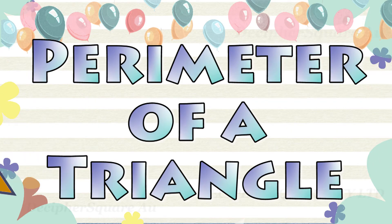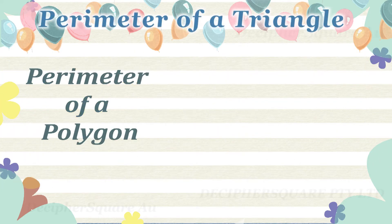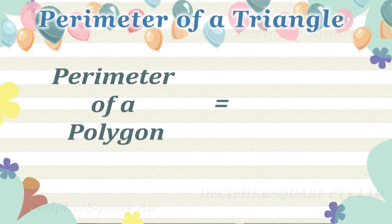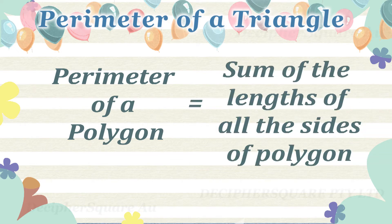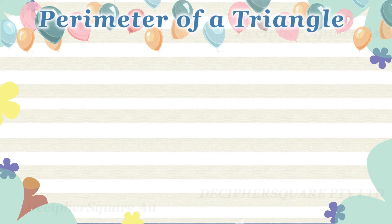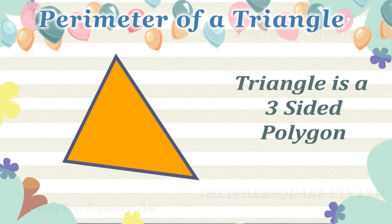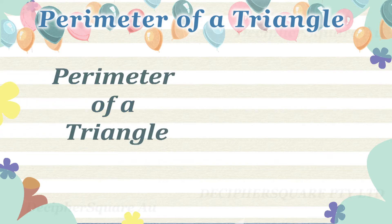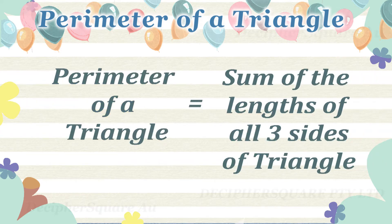Perimeter of a triangle. The perimeter of a polygon is the sum of the lengths of all the sides of a polygon. A triangle is a three-sided polygon. The perimeter of a triangle is simply the sum of the lengths of all the three sides of the triangle.